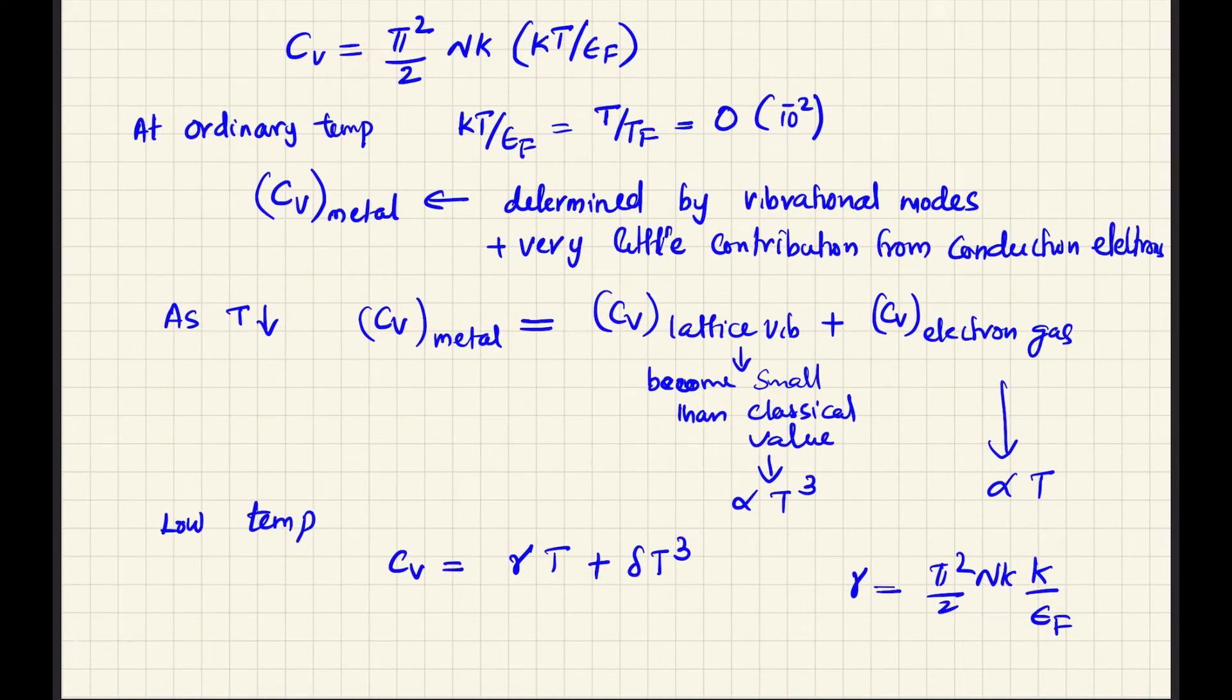The specific heat expression simplifies to C_v = (π²/2) n k (kT/ε_F), where ε_F is the Fermi energy. The electronic specific heat contribution - total specific heat is specific heat due to lattice vibration plus specific heat due to electron gas. At ordinary temperature, kT by ε_F, this ratio t by t_F is of the order of 10^-2. The electronic contribution to the specific heat is very small at room temperature.